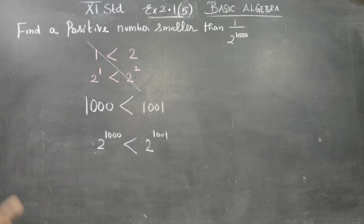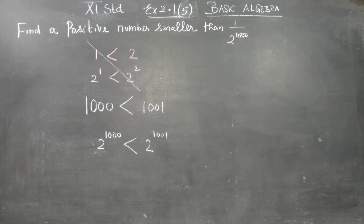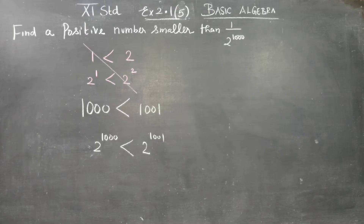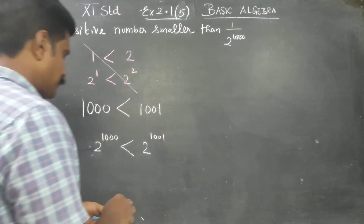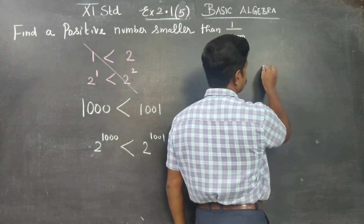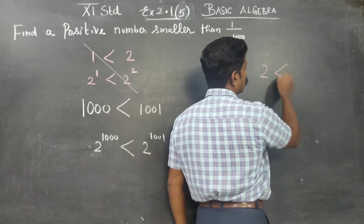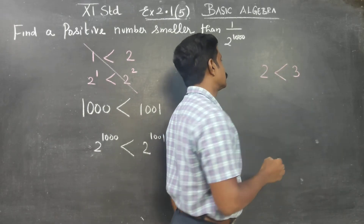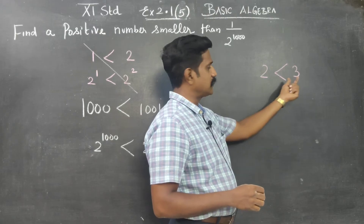Now I am going to take a reciprocal of this. Before taking the reciprocal, let me give a small example. 2 is less than 3 — 2 is a smaller number than 3.